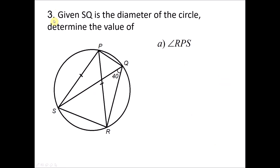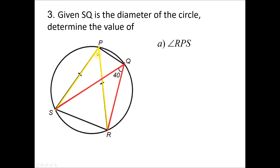Question 3: Given that XZ is the diameter of the circle, determine the value of angle RPS. Angle RPS is subtended by a minor arc, and the 40° angle at the circumference is also subtended by the same arc. Hence angle RPS equals 40 degrees.